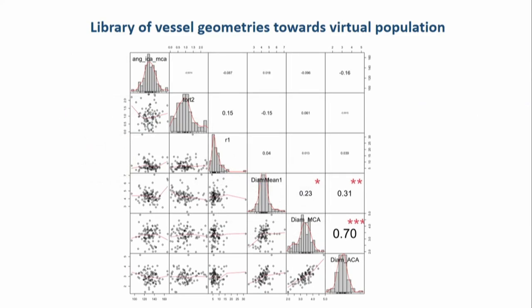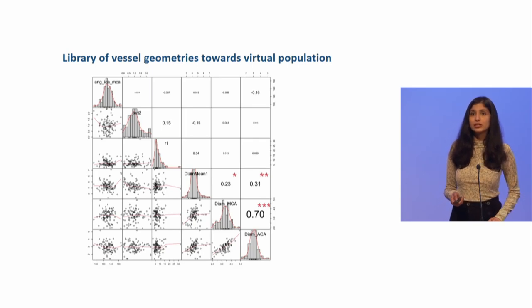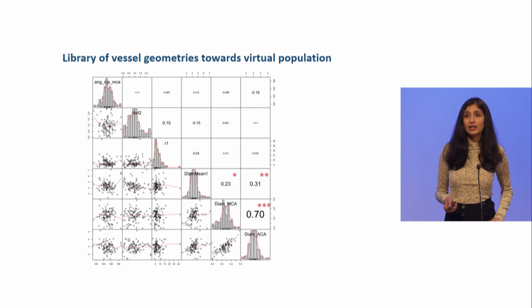We also had to find ways to integrate the vessel geometry library into the virtual population, as it was required as an input for the thrombectomy models. For this, we unfortunately couldn't find any significant associations between the local geometry and the clinical characteristics that were used to describe the virtual population. So, we just used intercorrelations between the geometry characteristics, for example, between the diameters and between the radii of curvature, to extract inputs for the in-silicon thrombectomy models.